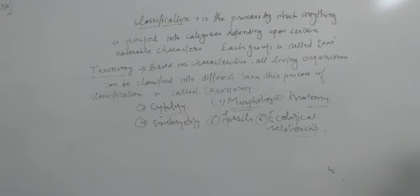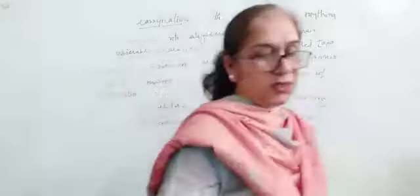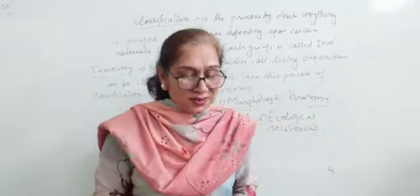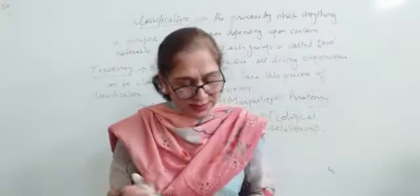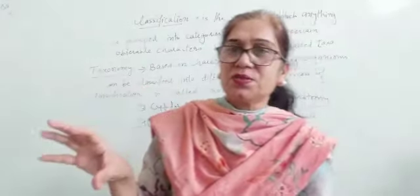The word systematics is derived from the Latin word systema, which means systematic arrangement of organisms. Systematics is derived from the word systema. It is given in your book. Systema means systematical arrangement of the organism. This way we will arrange different animals into different groups.